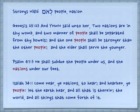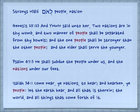Genesis 25:23: 'And Yehovah said unto her, Two nations are in thy womb, and two manner of people shall be separated from thy bowels, and the one people shall be stronger than the other, and the elder shall serve the younger.' Psalm 47:3: 'We shall subdue the people under us, and the nations under our feet.' Isaiah 34:1: 'Come near, ye nations, to hear, and hearken, ye people, let the earth hear, and all that is therein, the world, and all the things that come forth of it.'